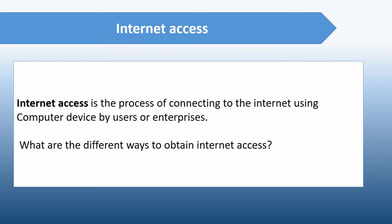The last component is internet access. Internet access is the process of connecting to the internet using a computer device, by a user or enterprise. There are different ways to obtain internet access, including wireless connection, mobile connection, hotspot, broadband, DSL, or satellite. Internet service providers such as PLDT, Globe, and Smart provide access to the internet via phone lines, cable television lines, or satellite connections. Without internet access during this pandemic, it would be very hard for students to adapt to new normal ways of learning.